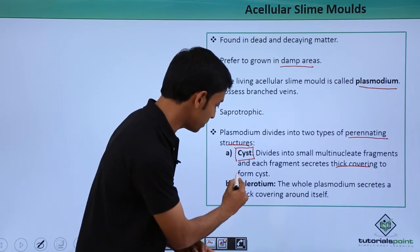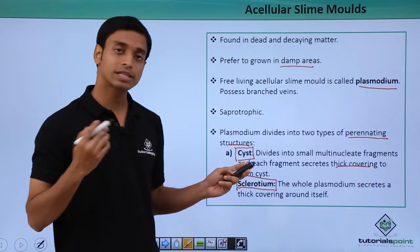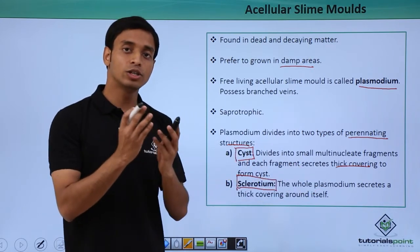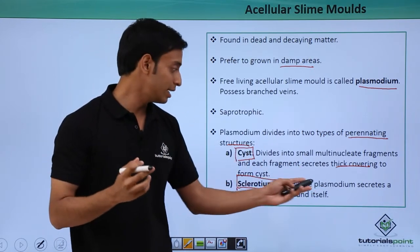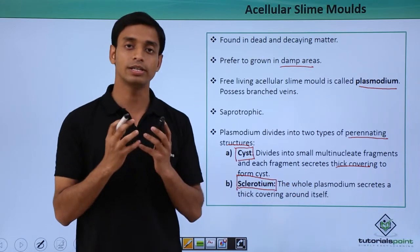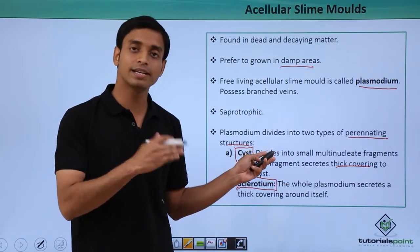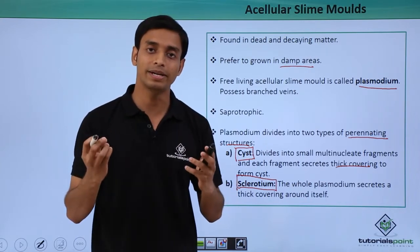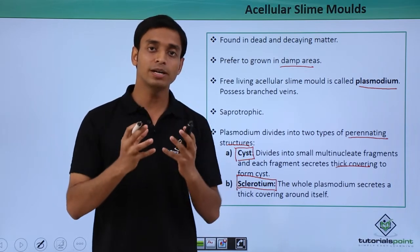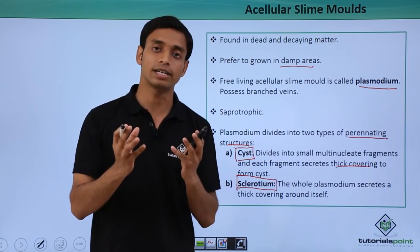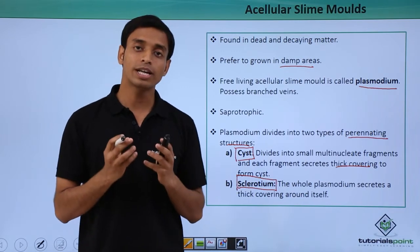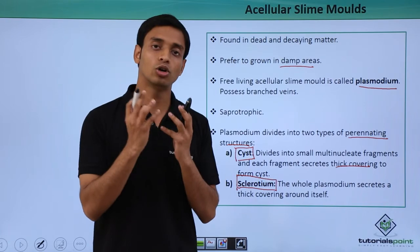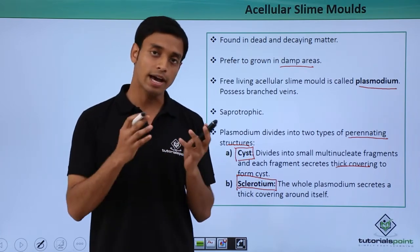The second type is known as sclerotium. Unlike the cyst, the whole plasmodium does not fragment or divide. Instead, the whole plasmodium secretes a thick protective covering around itself. The basic difference is: in a cyst, the plasmodium breaks into smaller fragments each forming a protective layer, whereas in sclerotium, the whole organism secretes a protective covering without dividing.